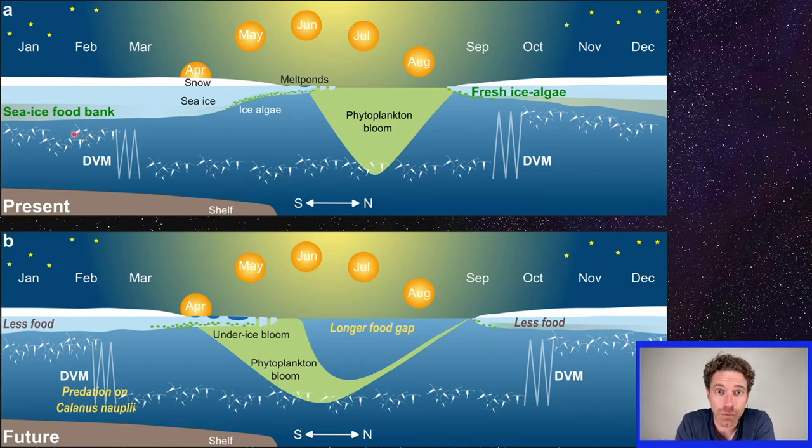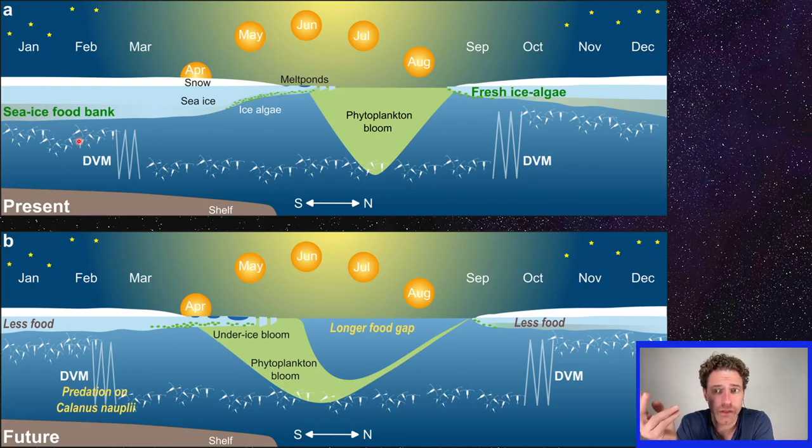And that's because these zooplankton, these copepods, you can think of them as little insects in the water or little shrimp, things like that. They try to avoid predation during the day. So they go down to greater depths when it's light out. And that's what you can see in the top. And so they hang out at depth so predators can't look up and see them and eat them.